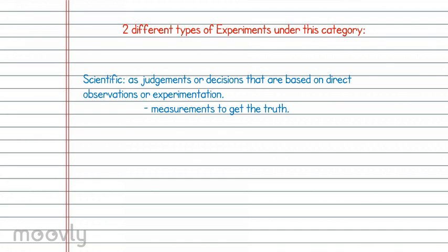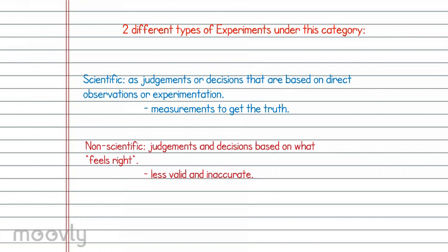There are two different types of experiments under this category. There is scientific, which is categorized as judgments or decisions that are based on direct observations or experimentation. The scientific is more of a measurement to get the truth. The non-scientific experiments are judgments and decisions based on what feels right. These are usually non-scientific and more invalid and inaccurate.